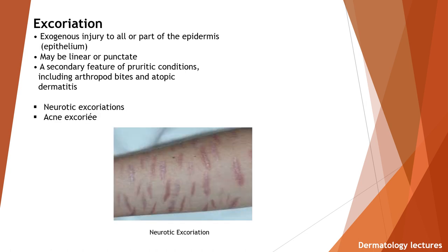Excoriation. It is an exogenous injury to all or part of the epidermis, may be linear or punctate. It is a secondary feature of pruritic conditions including arthropod bites and atopic dermatitis. Examples are neurotic excoriations and acne excoriée.